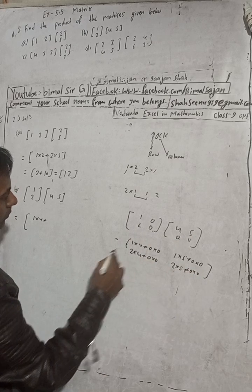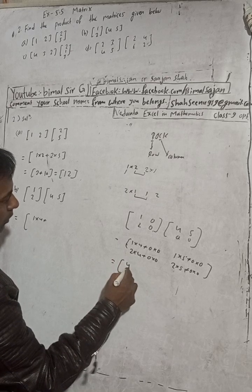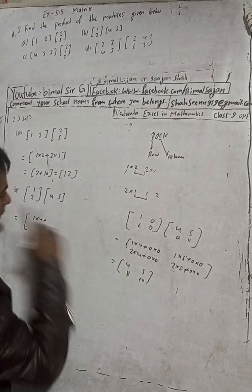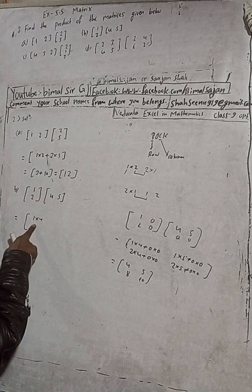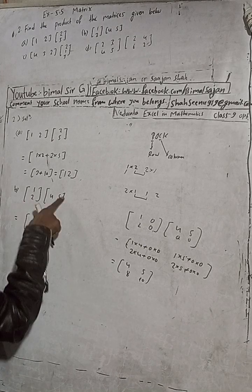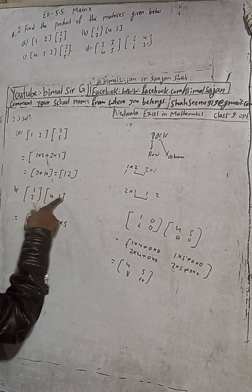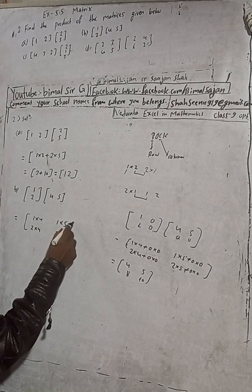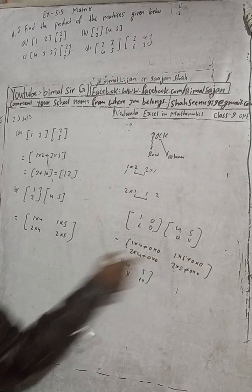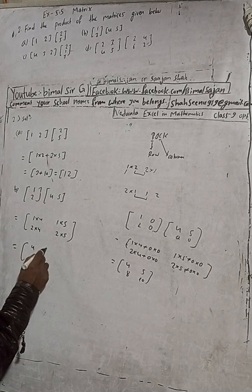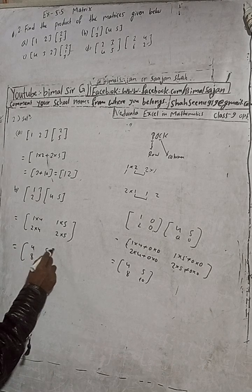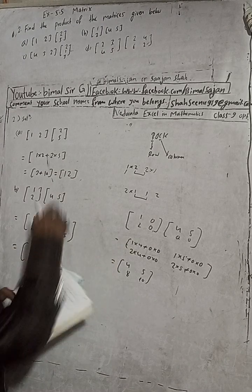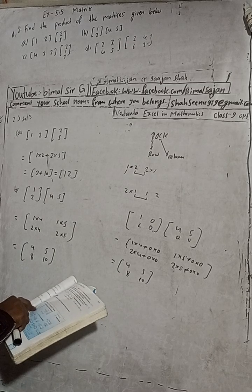So what is the result? 1 into 4 is 4, and 1 into 5 is 5, then 2 into 4 is 8, and 2 into 5 is 10. This is the answer: 4, 5, 8, and 10. Let me verify - the answer in the book is correct. So the result matrix is [4, 5; 8, 10]. The zero terms drop out, giving us this 2 into 2 matrix.